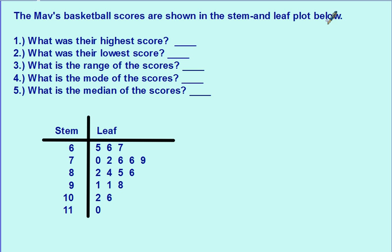The Mav's basketball scores are shown in the stem and leaf plot below. What was their highest score? So here's your stem and leaf plot. Stem on the left, leaf on the right. Your stems are anything except for the last digit. So this number right here really means 65. Remember you push your stem and your leaf, just squish them together, and that's your number. So 65, this would be 66, 67, 70, 72, 76, 76, 79, 82, 84, and so on. So what was their highest score? You want to look at your biggest stem and your biggest leaf. So 110, be sure and label all these, 110 points is your highest score.